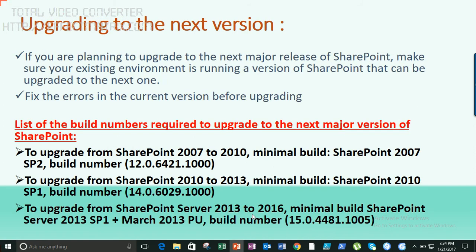When upgrading to the next version, the main criteria is ensuring your current farm is up to the latest CU or PU. A common mistake is skipping errors — orphaned features or content database errors — hoping they'll be fixed in the next version. That's not how it works. An error in SharePoint 2013 will still be an error in 2016. Always fix all errors in the current version before upgrading for a clean migration.